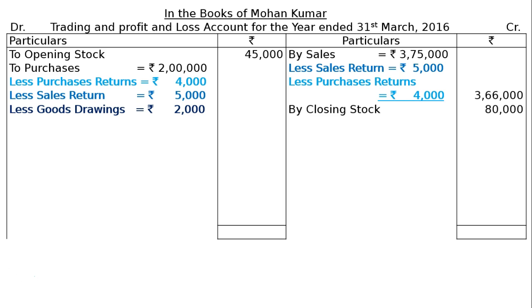Less goods drawings rupees 2,000 — per the adjustment, goods drawn by the proprietor for own consumption of rupees 2,000 were included in purchases. It will be deducted from purchases because the owner takes goods at cost price. It will also be reduced from capital as goods drawings. There are two types of drawings: goods drawings and cash drawings. Next, less free samples rupees 2,500 — free samples distributed for publicity costing rupees 2,500 were not recorded in the books.